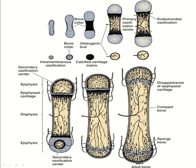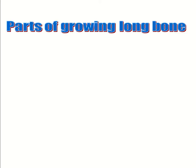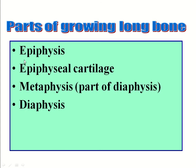In the adult long bone, this is the upper end, this is the shaft, and this is the lower end. The shaft arises from the primary ossification center, while the upper end and lower end derive from the secondary ossification center. The parts of the growing long bone are: epiphysis, epiphysial cartilage, and metaphysis — which is actually part of the diaphysis — and diaphysis.